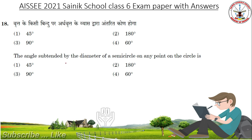The angle subtended by the diameter of a semicircle on any point on the circle is 90 degrees.